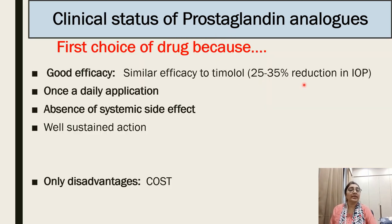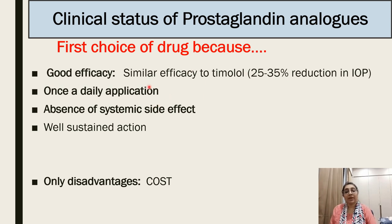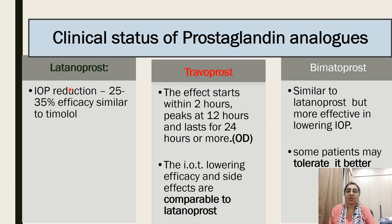Clinical status of prostaglandin analogs: they are the first-choice drug with good efficacy similar to timolol, providing 25 to 30% reduction in intraocular tension. Once-daily application is sufficient, with absence of systemic side effects and well-sustained action. The only disadvantage is that they are costly. Latanoprost and travoprost are similar to timolol in efficacy; bimatoprost is more effective in lowering IOP and some patients may tolerate it better.